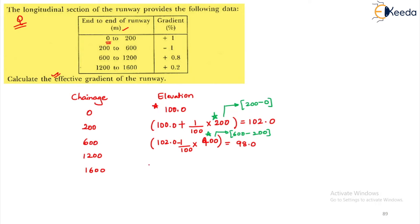For the next chainage, we take 98.0. The gradient here is positive, plus 0.8%. So we calculate 98.0 plus 0.8 divided by 100 multiplied by 600, which gives a value equal to 102.8.